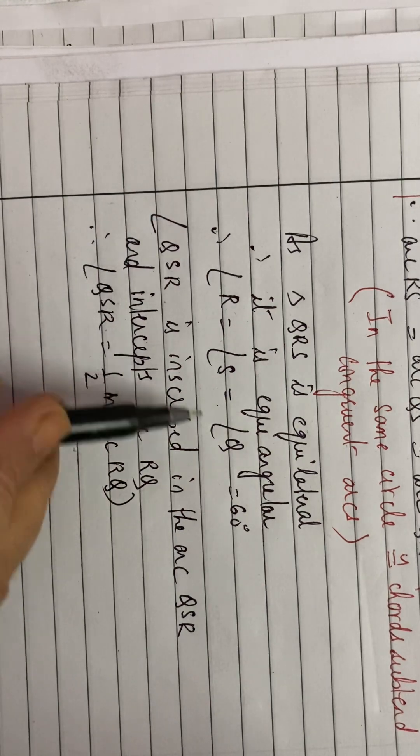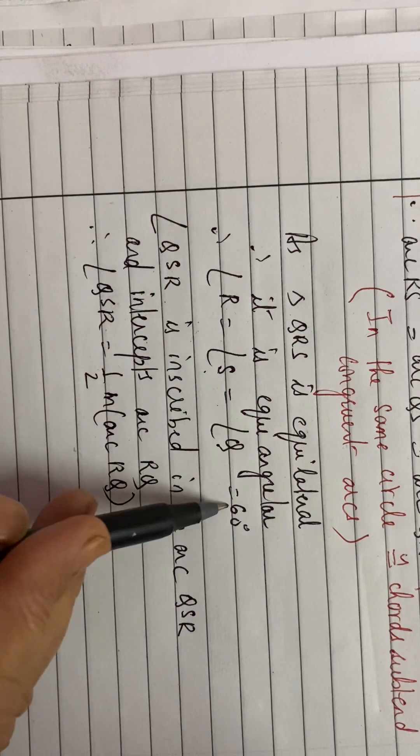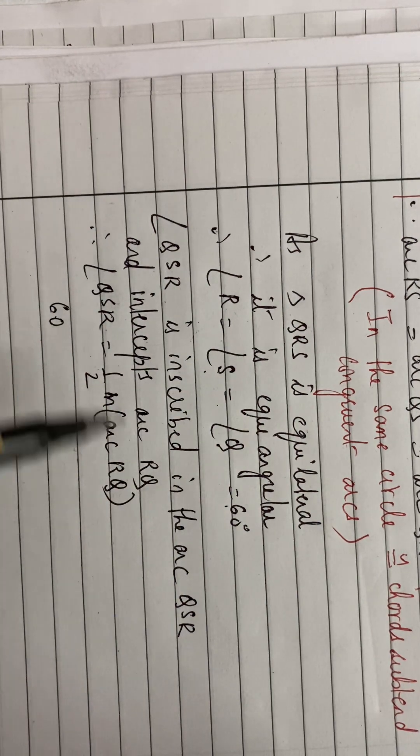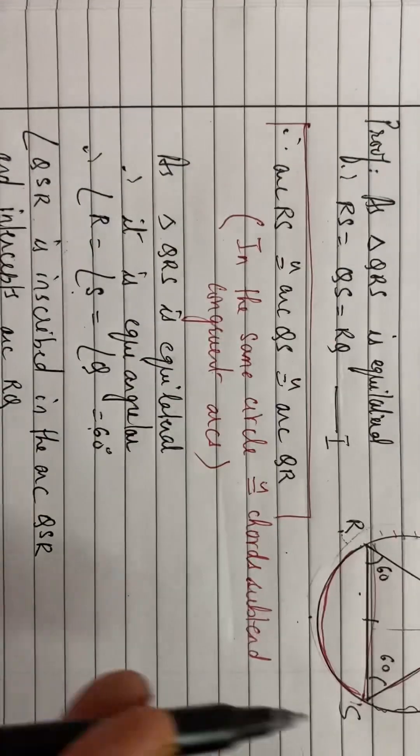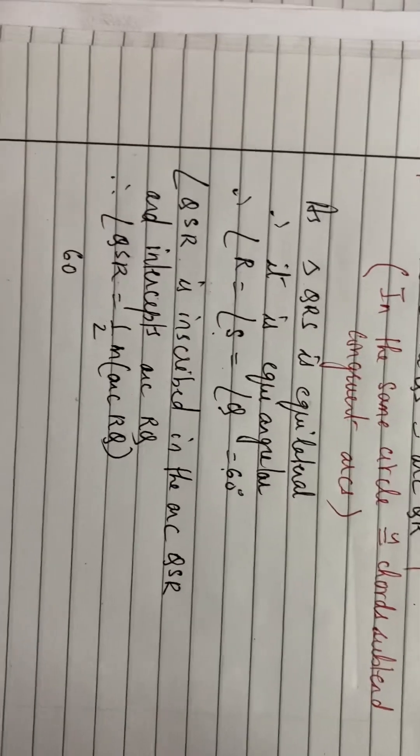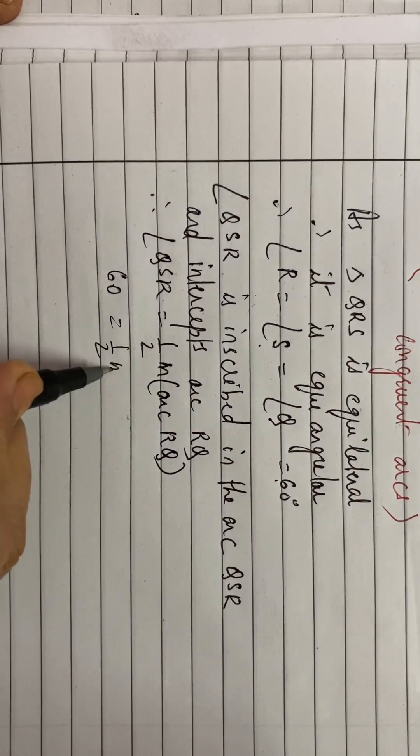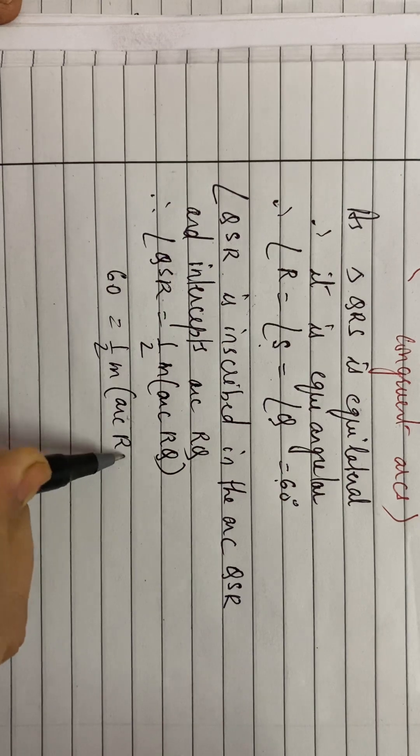What is measure of angle QSR? This angle S is QSR. It is 60 degrees, right? Angle QSR, see in the figure, QSR, that means angle S. Its measure is 60 degrees. So 60 is equal to half measure of arc RQ.